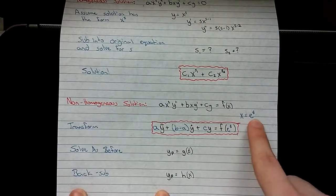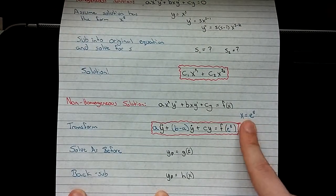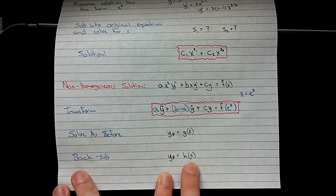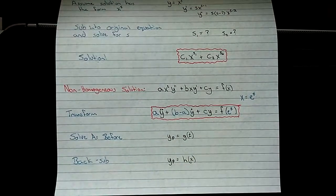Because, of course, you did this substitution right here, f at e to the t. So you're going to back substitute to get it back as a function of x. Okay, let's do an example.